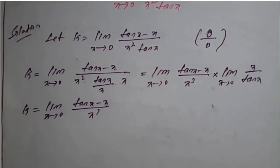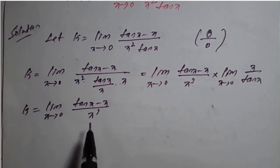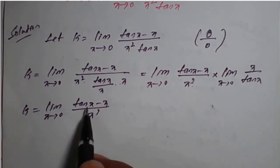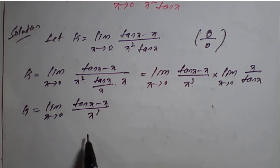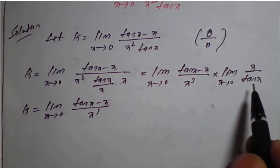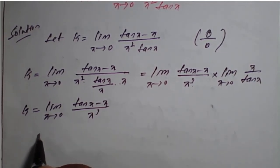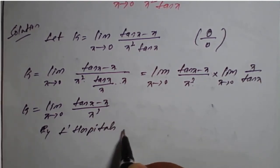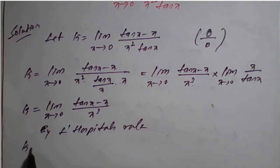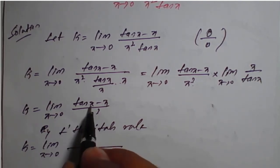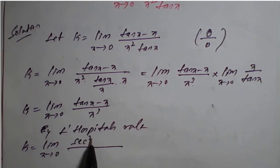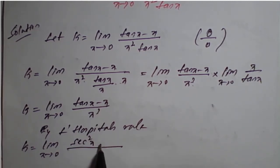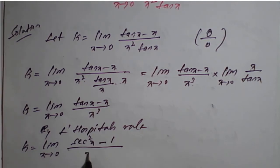On further simplification we apply L'Hôpital's rule again, since substituting x tends to 0 gives 0 minus 0 over 0 cubed, which is again 0 by 0 form. By L'Hôpital's rule, k equals limit as x tends to 0 of: differentiation of tan x is sec squared x, minus differentiation of x which is 1, divided by differentiation of x cubed which is 3x squared.